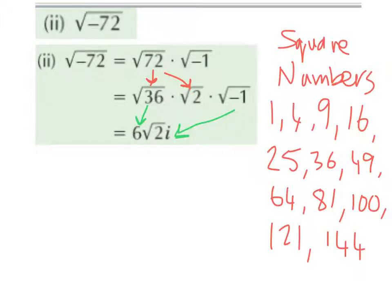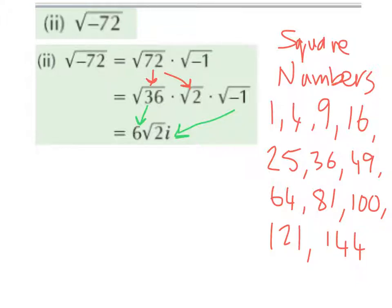Here's a list of the first 12 square numbers: 1 squared is 1, 2 squared is 4, 3 squared is 9, 4 squared is 16, 5 squared is 25, 6 squared is 36, 7 squared is 49, 8 squared is 64, 9 squared is 81, 10 squared is 100, 11 squared is 121, and 12 squared is 144.